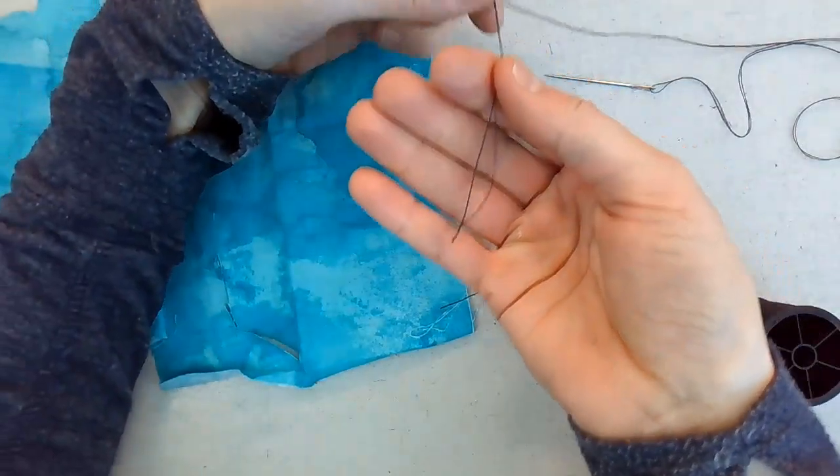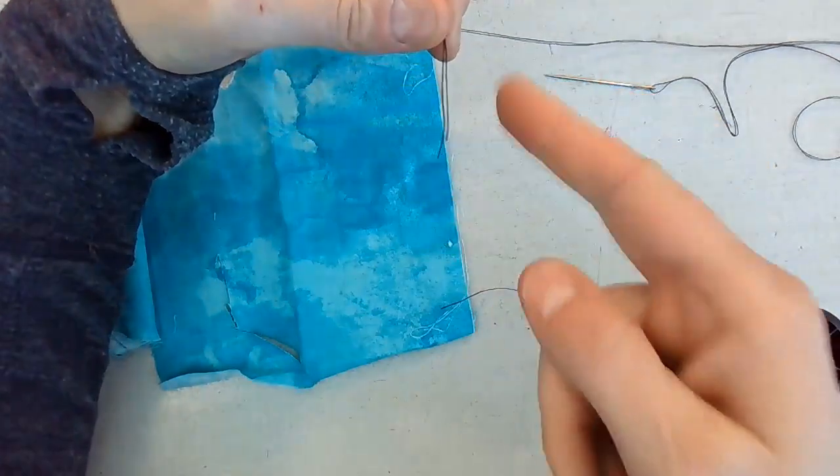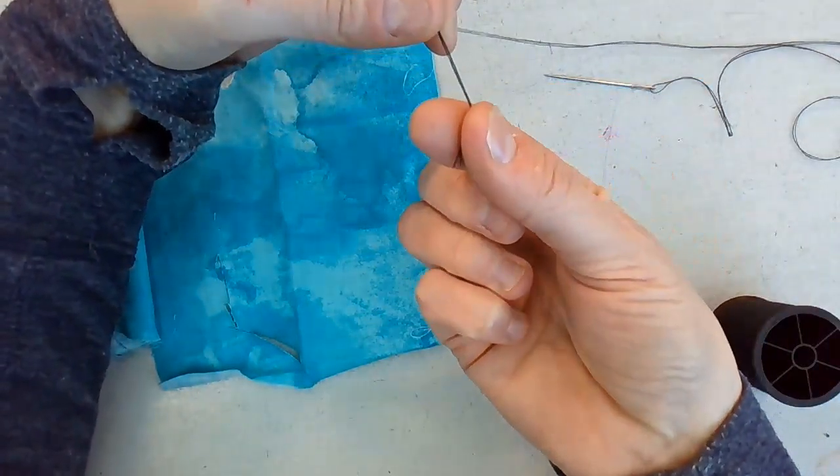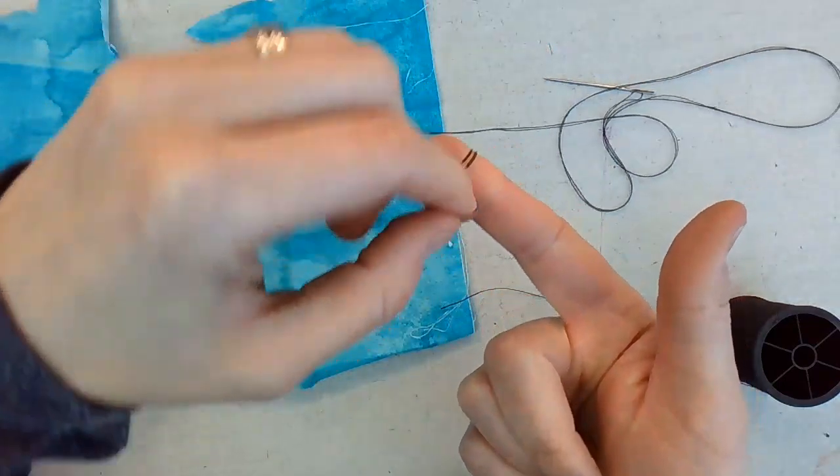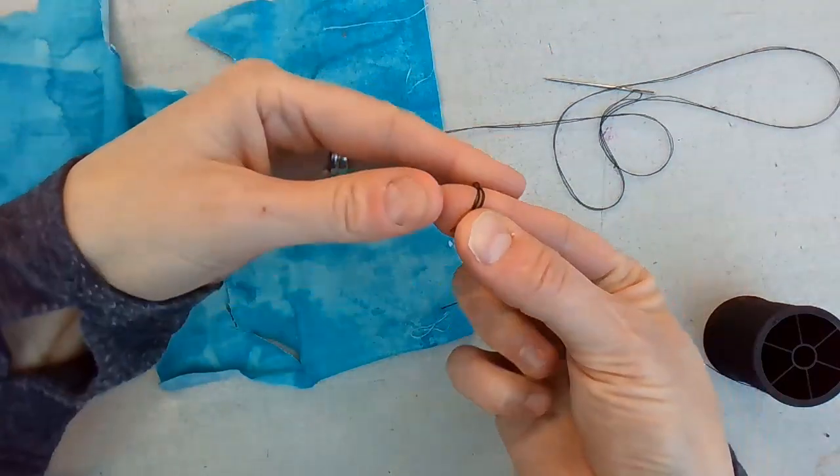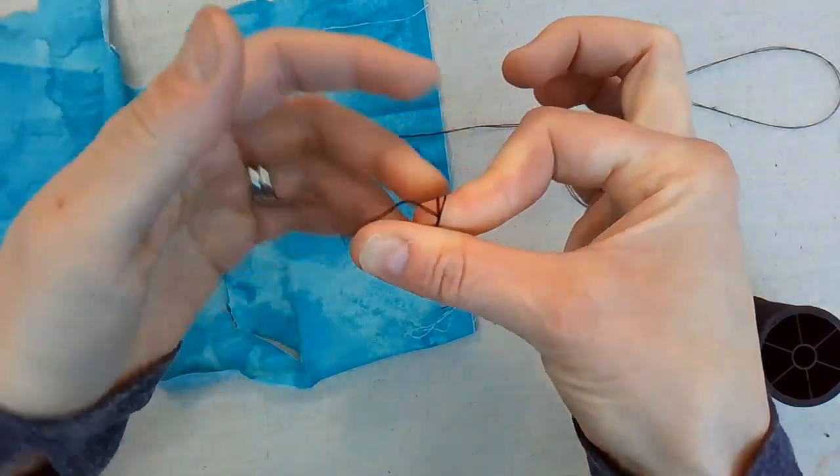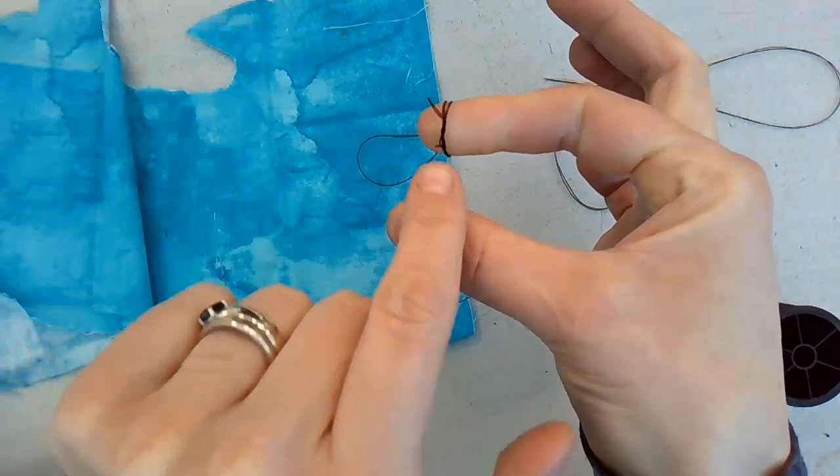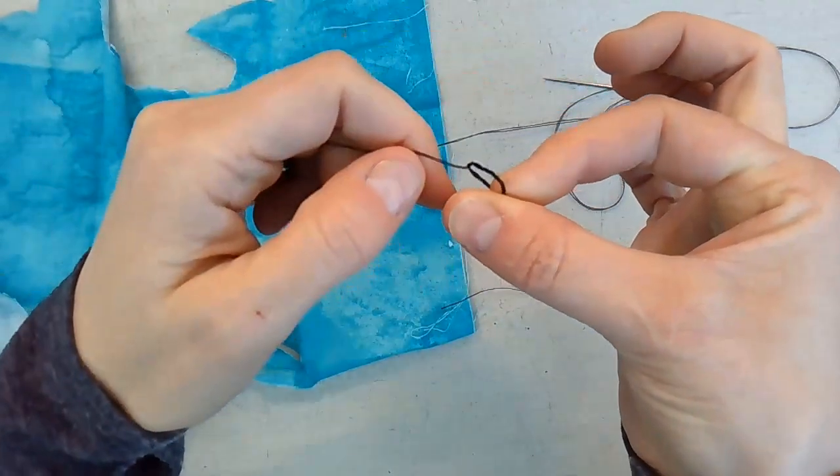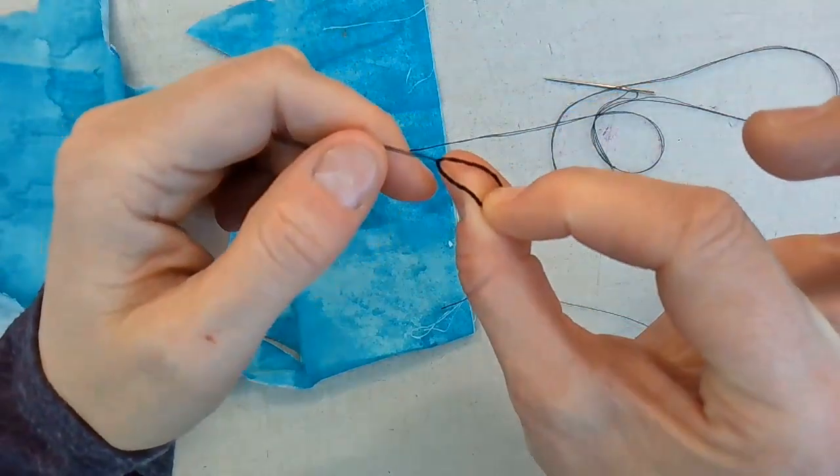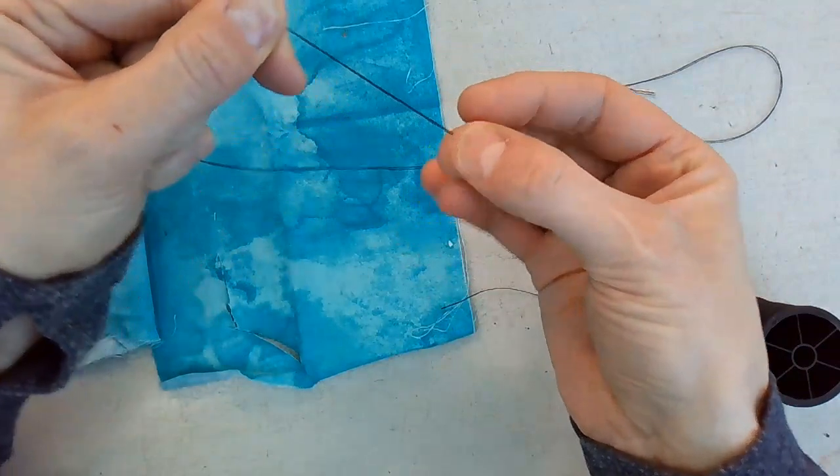And then you need to make a nice big knot. Wrap it around your finger a couple of times, two or three times. And then you're going to roll the thread off your finger and that is slowly tying it into a knot. So keep rolling it and then pull. I'm holding it and I'm going to pull and it creates a nice big knot.